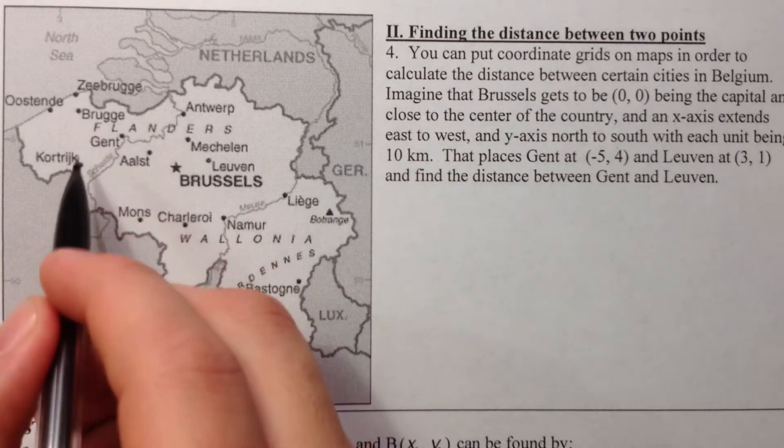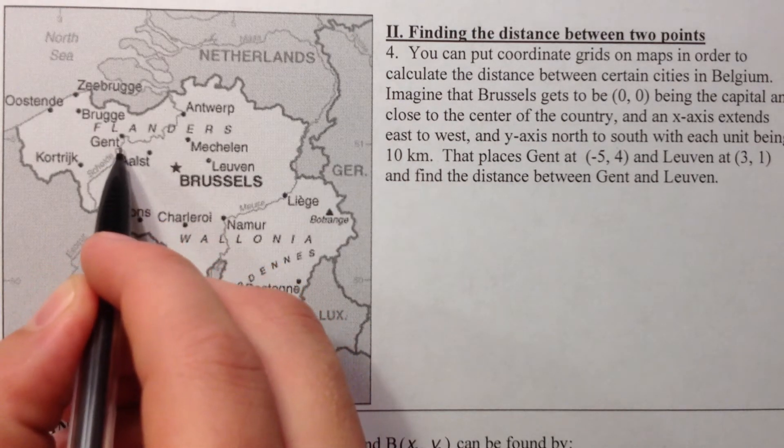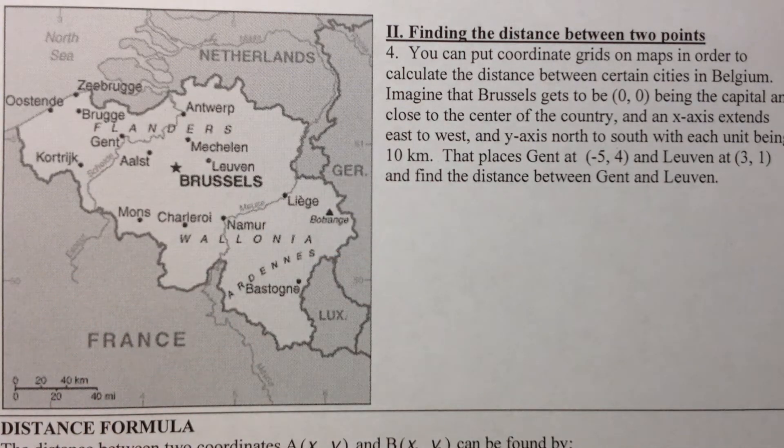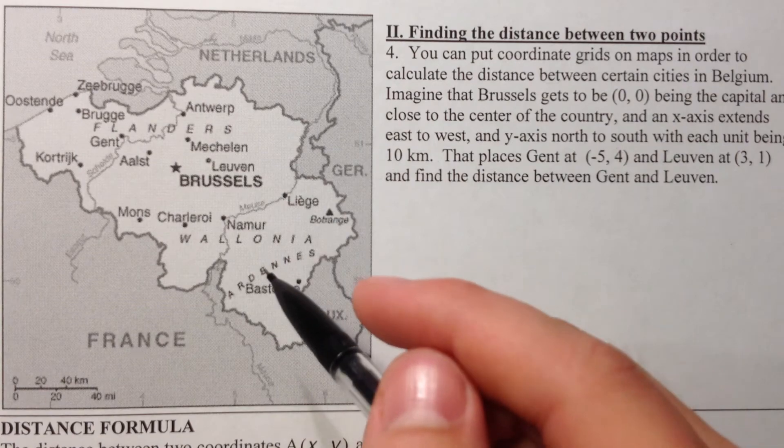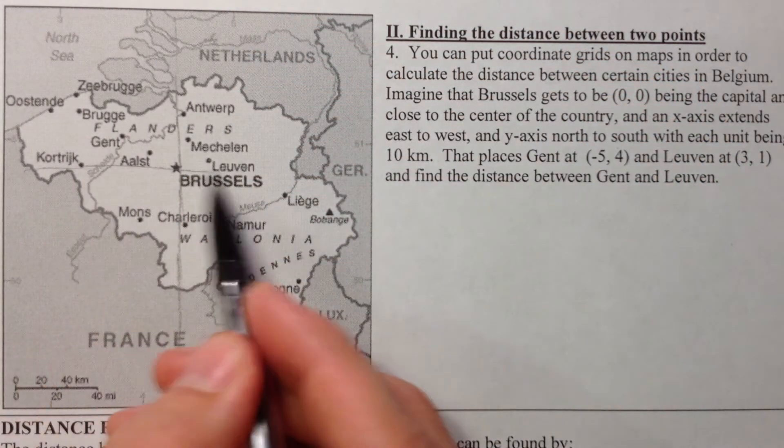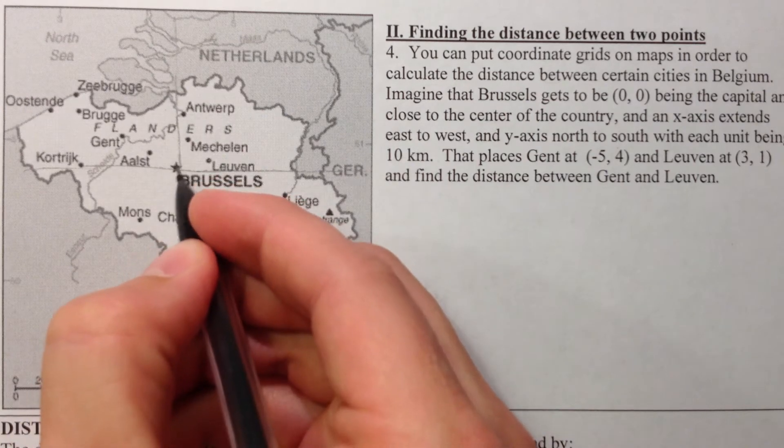And now my brother actually lives in Ghent, or Ghent if you prefer to pronounce it in Flemish. So, if we put on a coordinate grid, and imagine we're putting an x, y through here. And so that's our 0, 0 point.